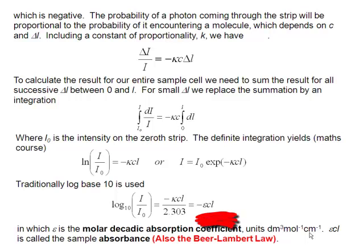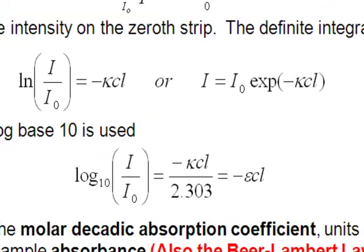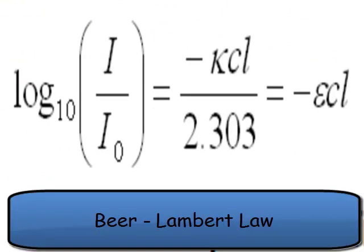That whole thing, εcl, is sometimes referred to as the absorbance. And that equation there, log₁₀(I/I₀) is equal to minus εcl, is known as the Beer-Lambert law.